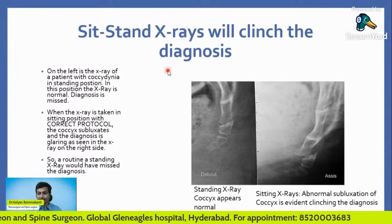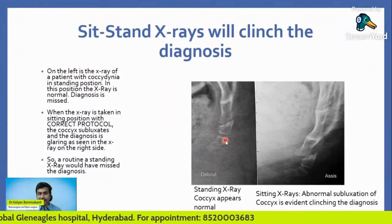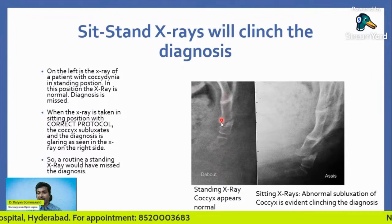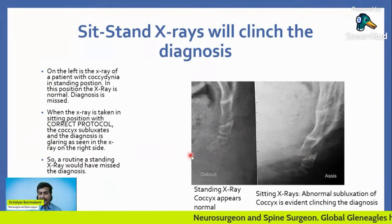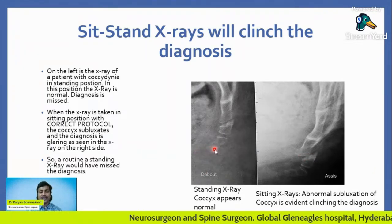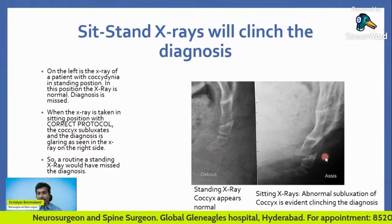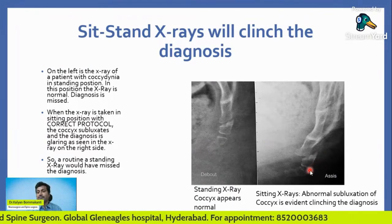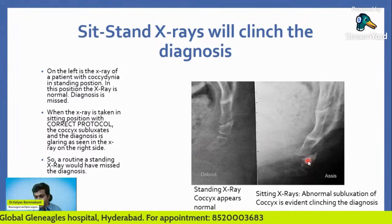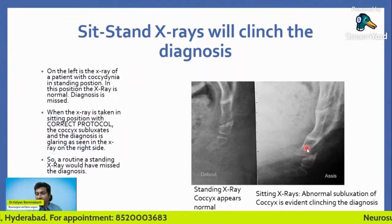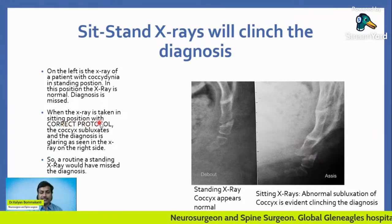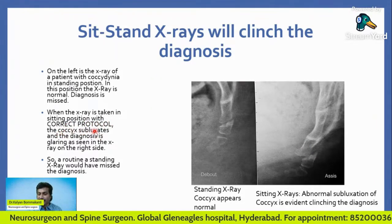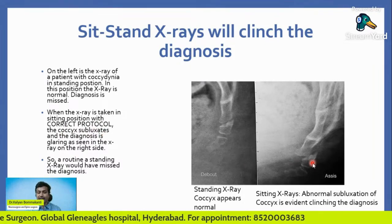So how do you diagnose this? This picture was taken when the patient is standing — the x-ray appears absolutely normal. This x-ray was taken when the patient is sitting. In the standing position, the coccyx x-rays are absolutely normal. But when the patient sits, the coccyx goes into subluxation — you can see the subluxation; the coccyx is gliding on the sacrum and the diagnosis is evident. When the x-ray is taken in the sitting position with the correct protocol, the subluxation is glaring in the x-ray.